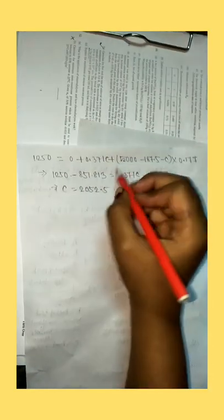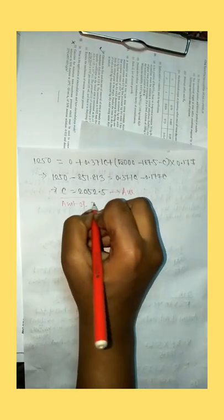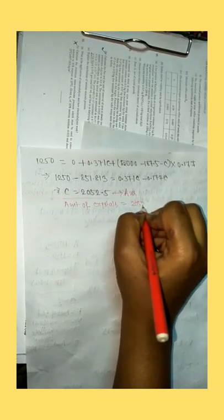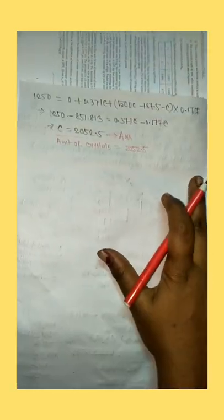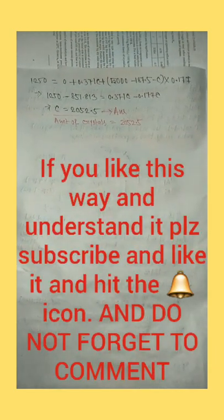Solving the equation gives the yield of crystals C = 1579 kg approximately. This is our desired answer — the amount of crystal obtained. Don't forget to comment, please subscribe if you like this video and this way of solving problems. If you have any questions, comment in the box below. Bye!